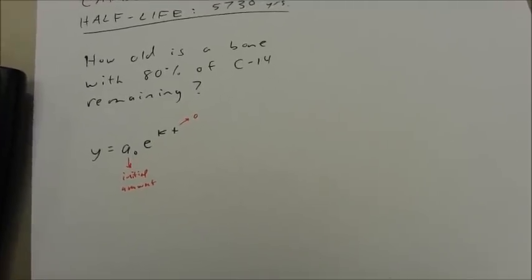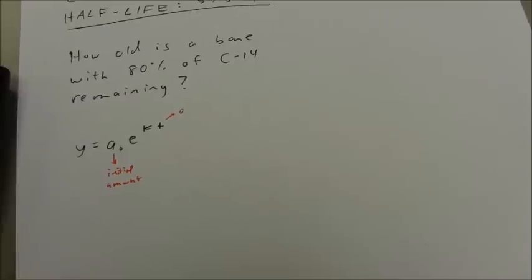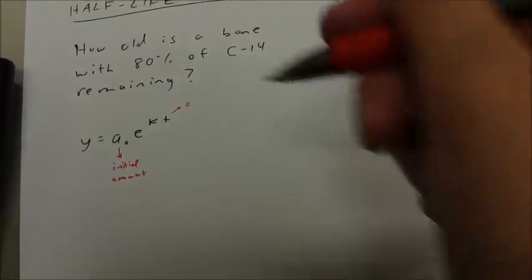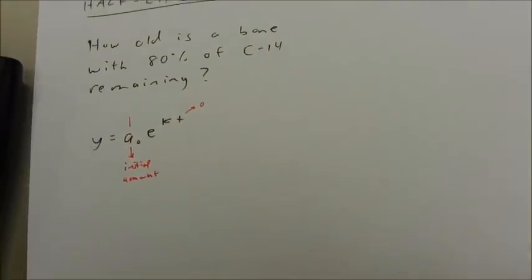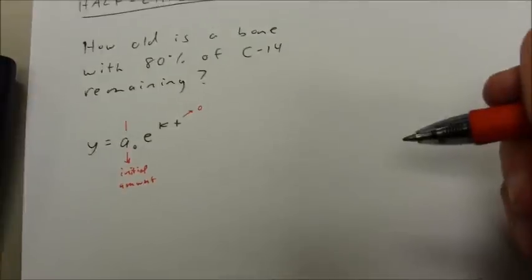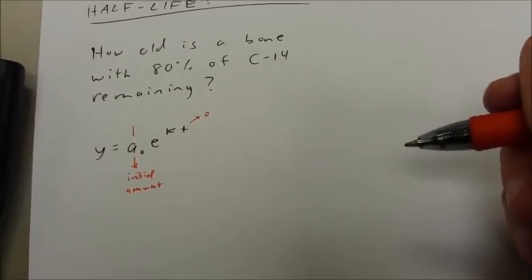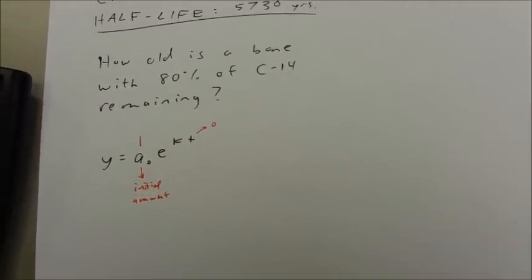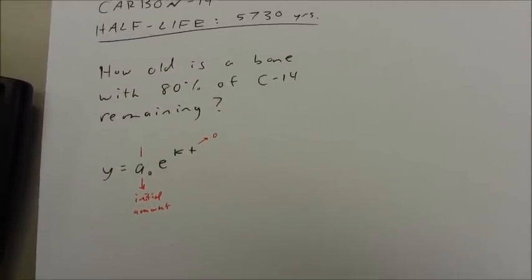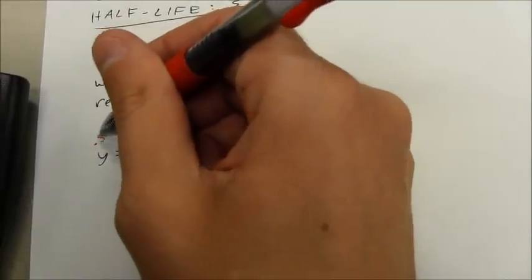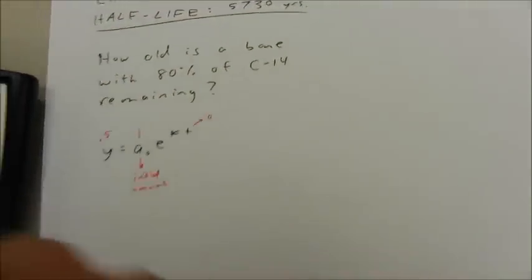So for example, I could start out with an initial amount of 1 unit, and then I could look at it in terms of a percentage. When I have 1 unit, after that 5,730 years goes by, I'm going to have half remaining. So I go from 1 unit to half a remaining unit.